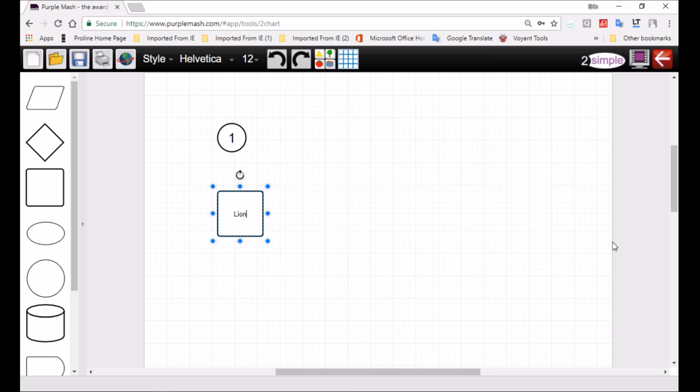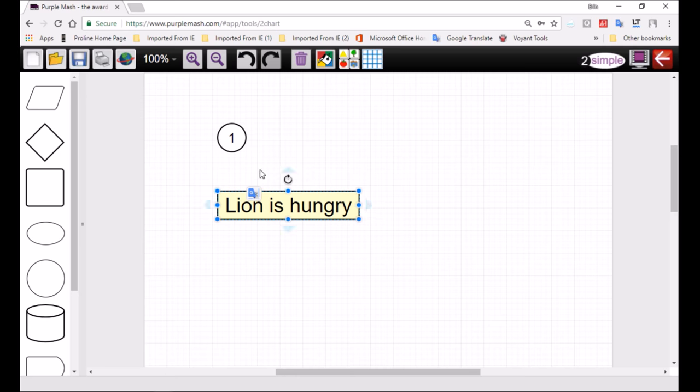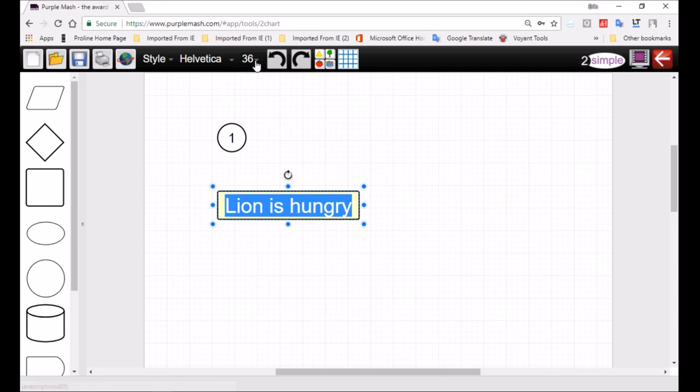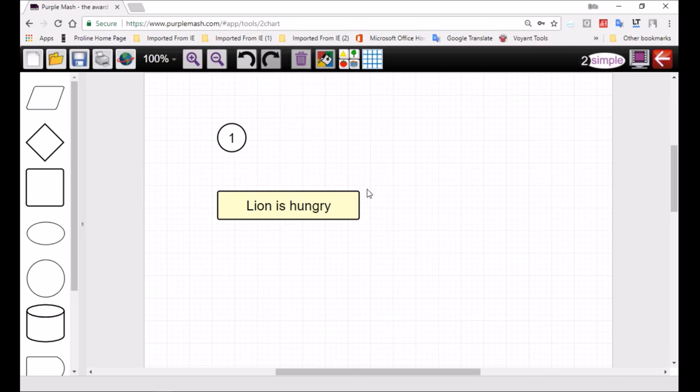Lion is hungry. Now that's the state of the lion - the condition of the lion is a hungry lion. So the word hungry describes what the lion's like. He's in a state of hunger. So naturally we know that when animals, even human beings, when we're in a particular state, action takes place. We usually do things.